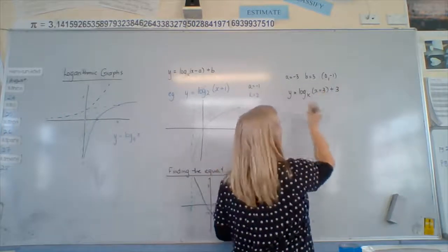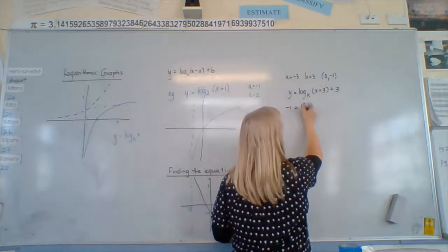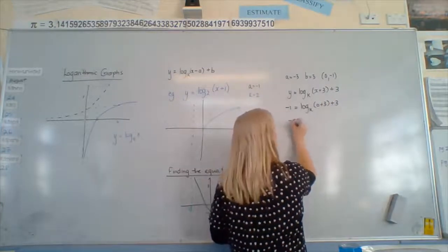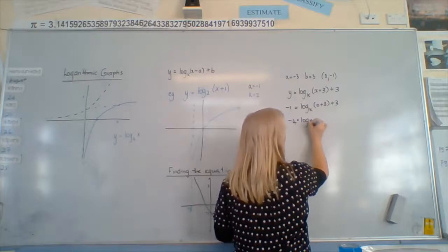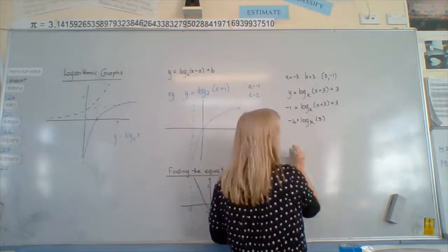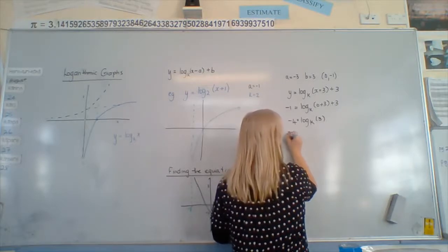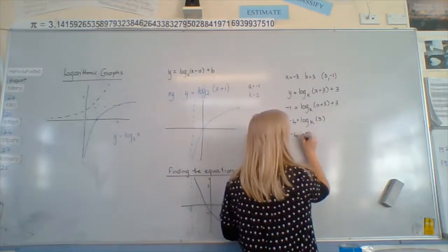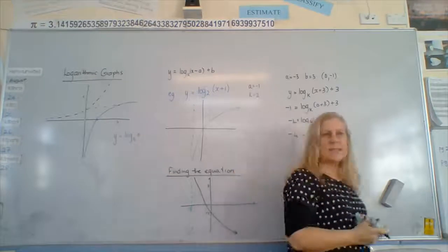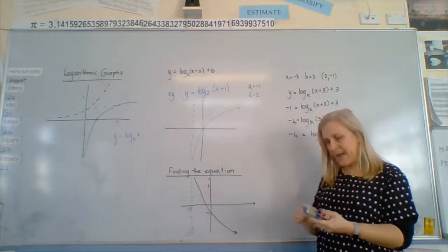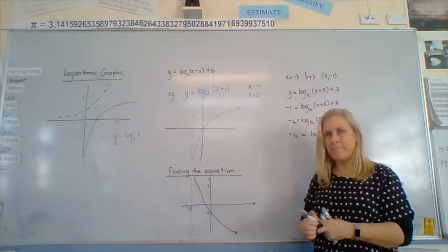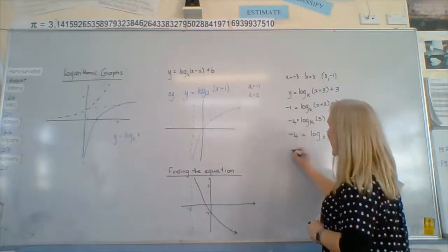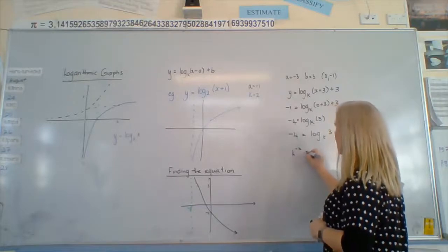So we can put this value in: negative 1 equals log base k of (0 + 3) plus 3. That gives us negative 4 equals log base k of 3. What are we going to do next? We use that equation we learnt in algebra — we can rewrite this. So we know that k to the power of negative 4 equals 3.